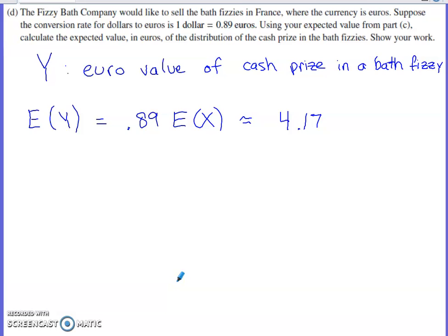And then the last part of this, the company wants to start selling the bath fizzies in France. They use euros in France rather than dollars. They tell us that $1 is 0.89 euros. Using the expected value from part C, calculate the expected value in euros of the distribution of the cash prize in each bath fizzies. Show your work. I had to find a new random variable just so I could apply some notation to this. So capital Y is going to be the euro value of a cash prize in a bath fizzies.